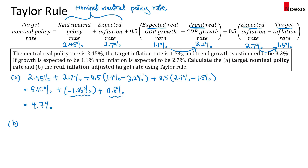For B, if you're looking for the real inflation-adjusted target rate, you just need to take the target nominal policy rate minus the expected inflation rate of 2.7 percent. That equals 2 percent. This is what it means by real — we remove inflation from the nominal rate.